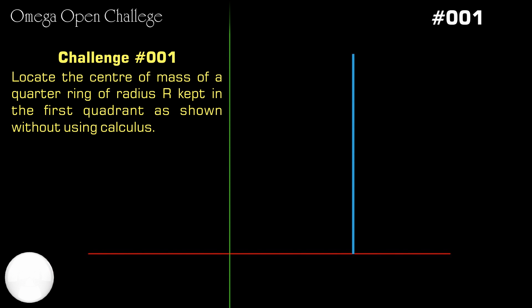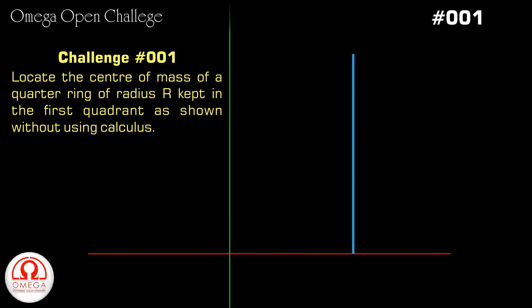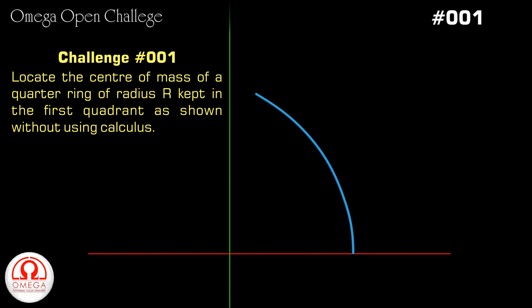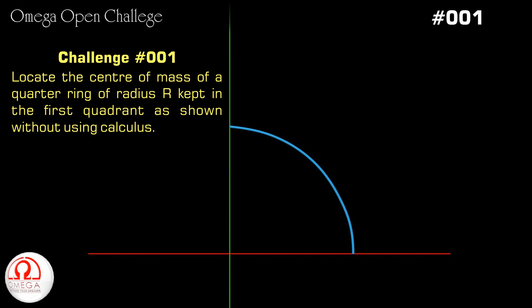Welcome to Omega Opin Challenge. In this video we present to you the solution of our first challenge. The challenge was to locate the center of mass of a quarter circular ring of radius r kept in the first quadrant without using calculus.